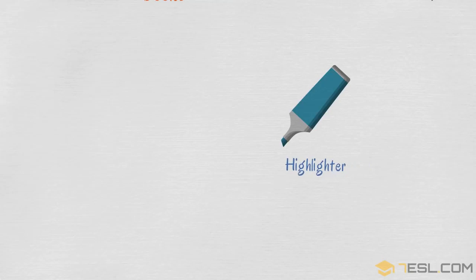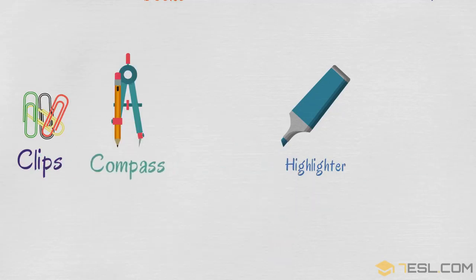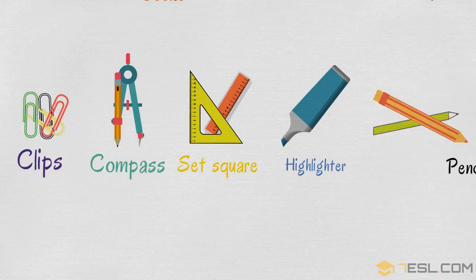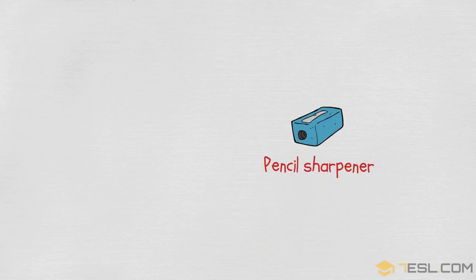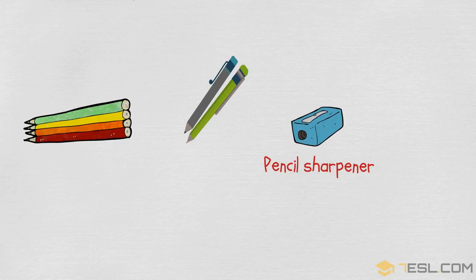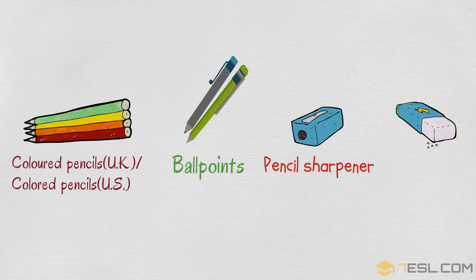Highlighter. Clips. Compass. Set square. Pencils. Pencil sharpener. Color pencils. Ballpoints. Rubber — in the UK. Eraser — in the US.